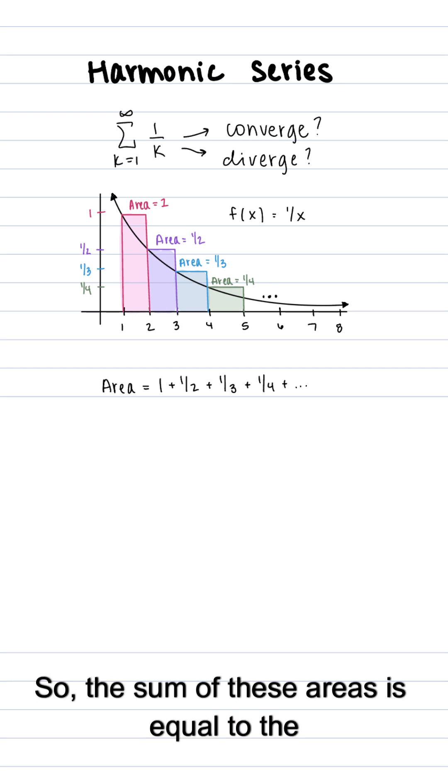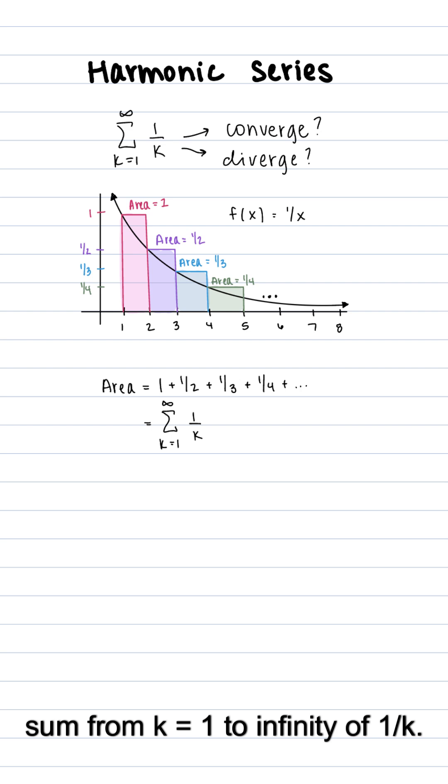So the sum of these areas is equal to the sum from k equals 1 to infinity of 1 over k.